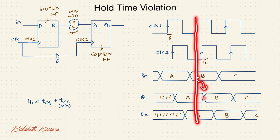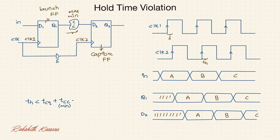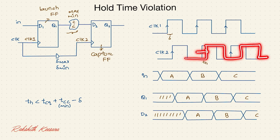So the hold time condition becomes: clock-to-Q delay plus combinational circuit delay minus delta. If delta maximum and delta minimum are both mentioned, we check for the worst case. If delta is maximum, clock 2 is shifted a lot, and it may happen that even before the clock edge, input D2 changes — so maximum delta is the worst case condition for this scenario.